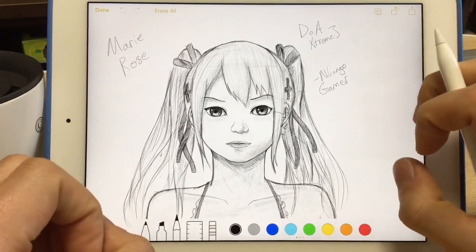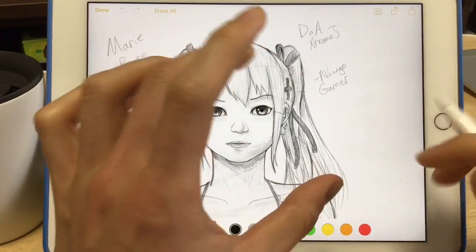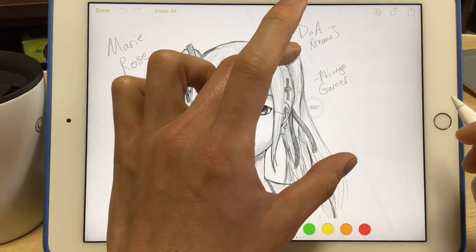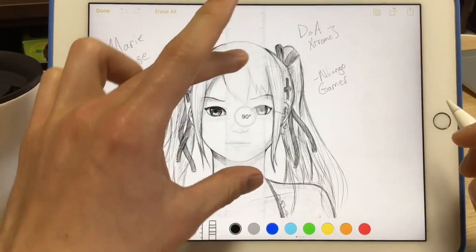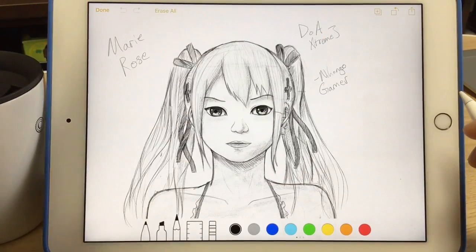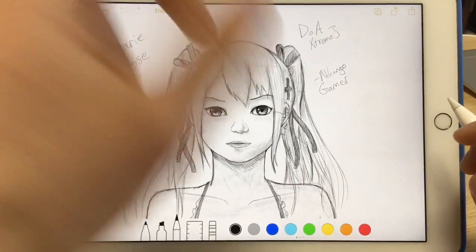And actually, while I was drawing this picture yesterday, I discovered a really interesting trick. I think I just placed my fingers on here by accident, and this ruler appeared, and I thought, hang on a minute. And when I took my fingers off, it disappeared. And I realized this is actually a shortcut.